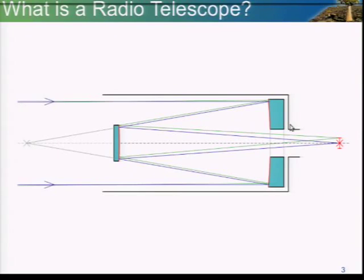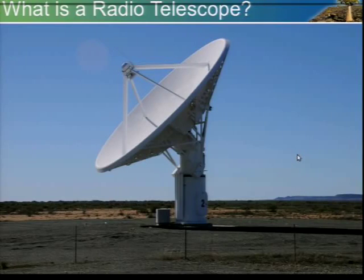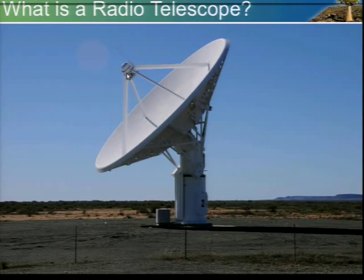An optical telescope kind of looks like this — light is collected by a large mirror and then focused onto a sensor. It's kind of like your digital camera, only better. A minimal radio telescope looks like this: radio waves are collected by a parabolic reflector and focused onto a receiving antenna with a low noise amplifier. It's really a lot like your DSTV dish, just better.